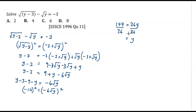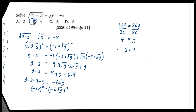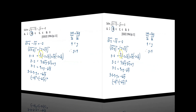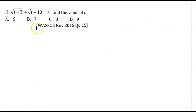To get the value of y, we divide both sides by 36. Therefore y equals 144 divided by 36, which gives an answer of 4. So the value of y is equal to 4, which is possible answer B.